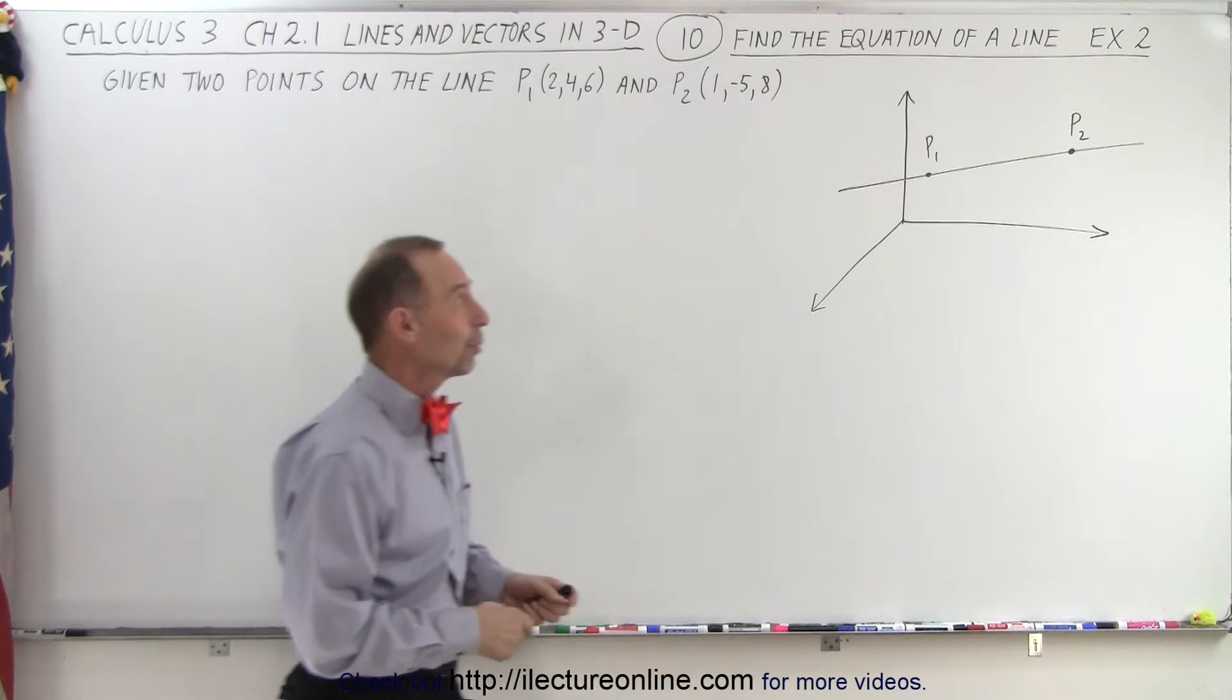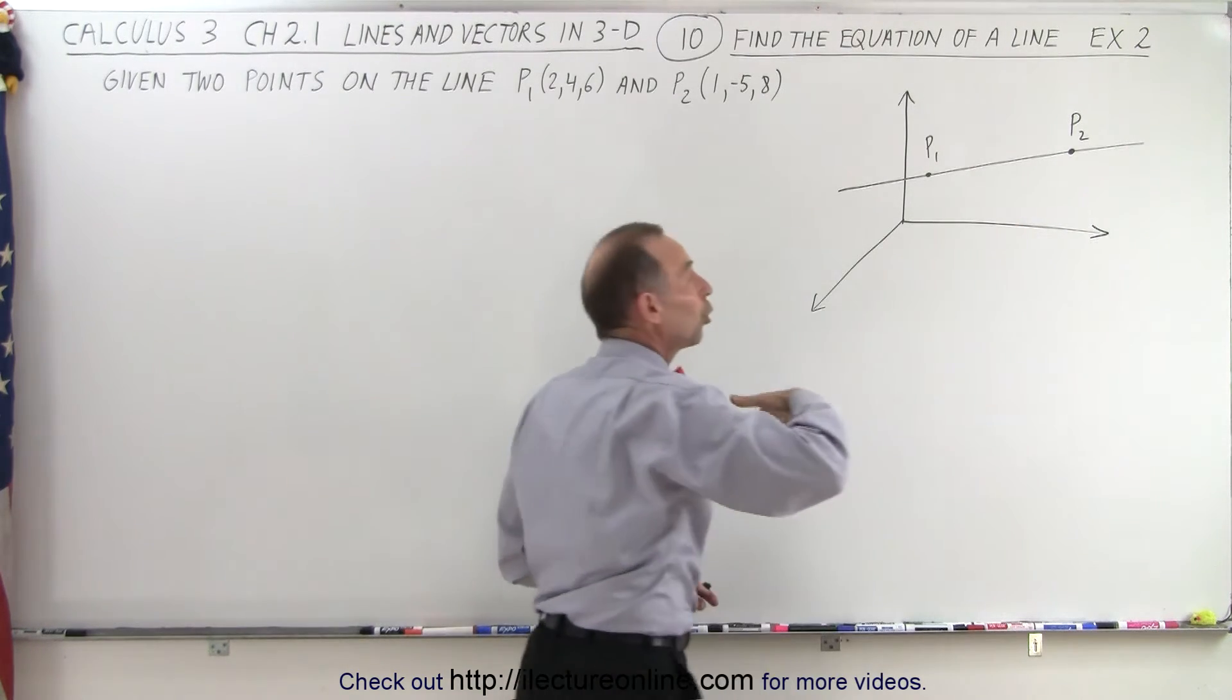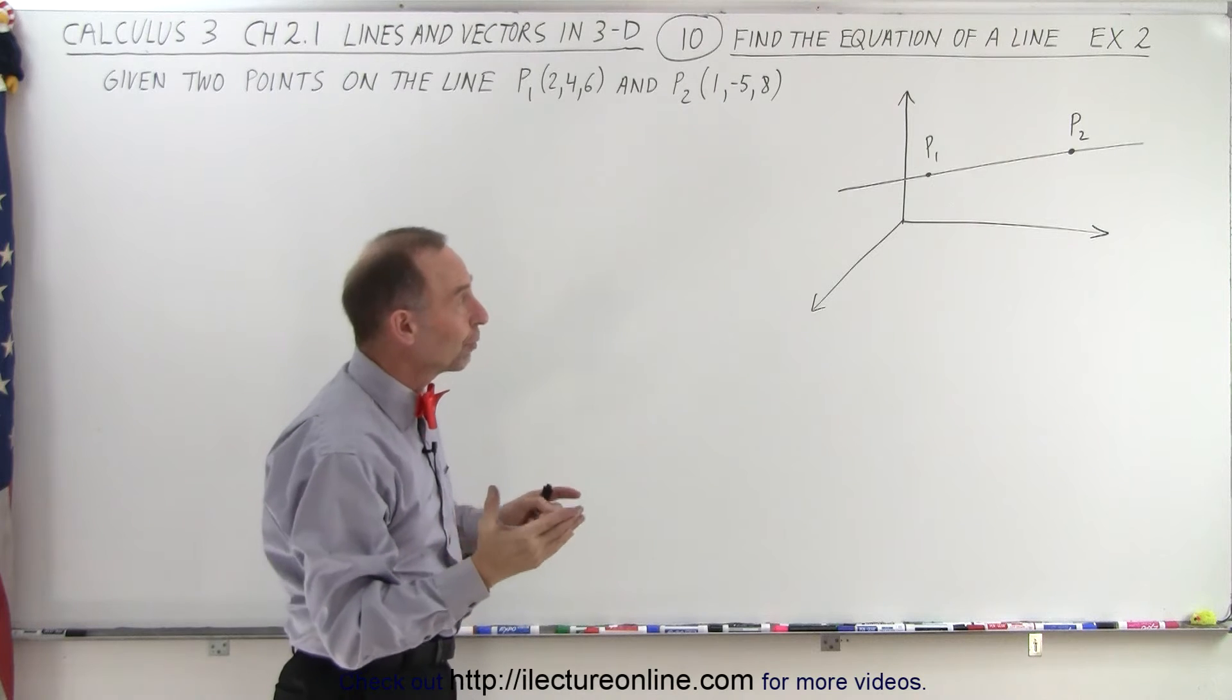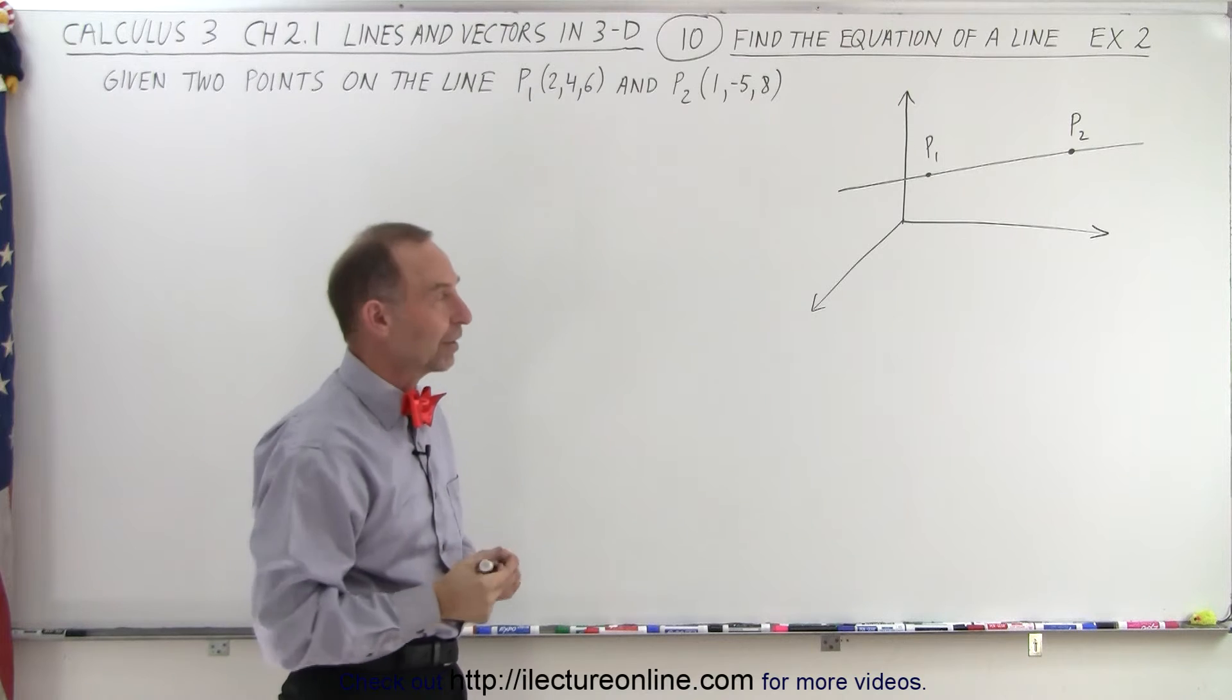And to do that, we're simply going to subtract the x, the y, and the z coordinates of the two points from one another to get the length of the x, y, and z components of the parallel vector.